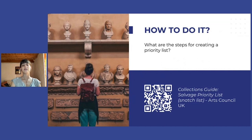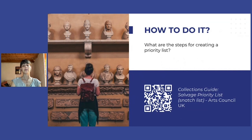To give a series of steps and a logical order to the important activities for the creation of a priority list, I decided to base myself on this extremely complete and exhaustive publication of the Arts Council UK. This document has been constructed as a checklist and it allows museums, archives and libraries to proceed with the different necessary activities in a logical and effective way.